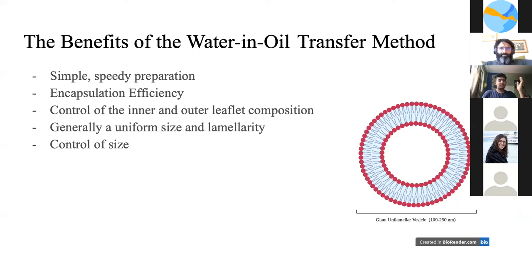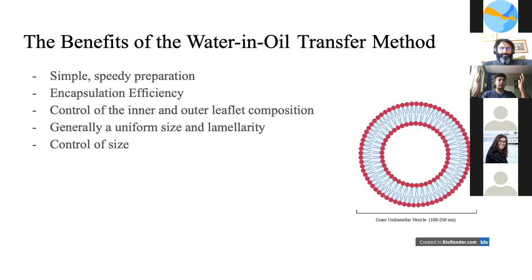The benefits of the water and oil transfer method: first, it's simple and fast — it takes less than one and a half hours to form your product. The ability to protect expensive cellular machinery through encapsulation efficiency is also important. Most importantly, you can control the inner and outer leaflet positions — changing the type of amphiphile, introducing a different hydrophilic head, or a single-chain amphiphile with only one tail. You can also control vesicle size by varying shear forces and the lamellarity; this method produces unilamellar vesicles, most pertinent to origin of life research.